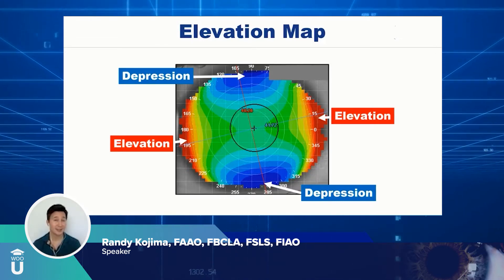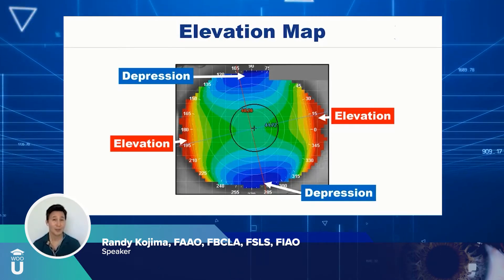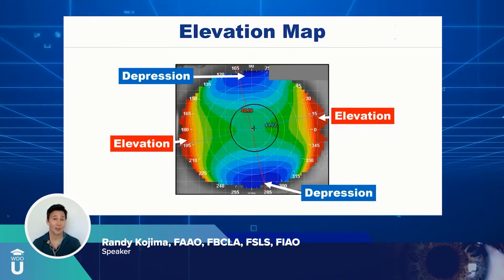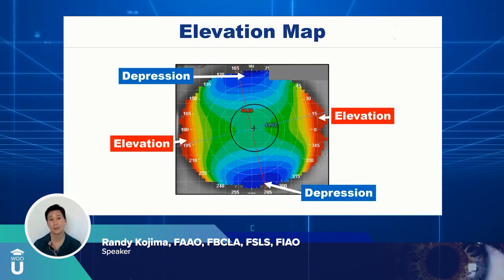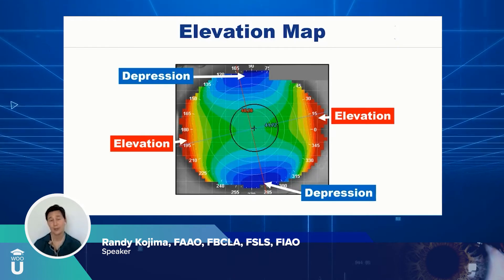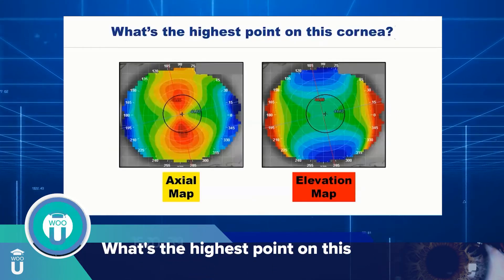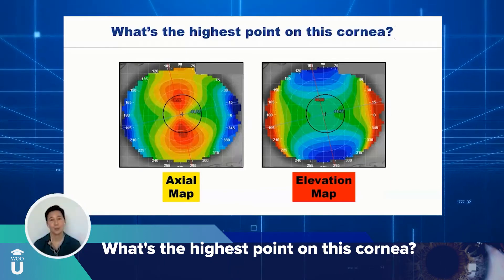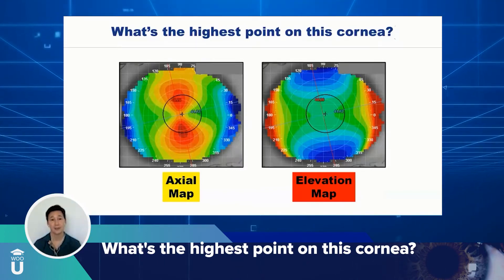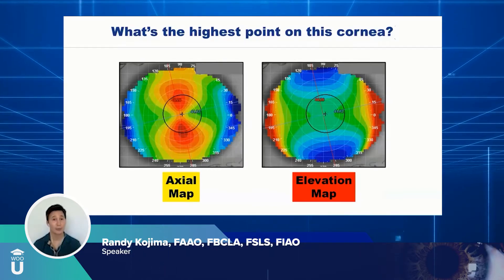In a case that's as easy as this, it's probably not necessary to use an elevation map, because you would know a contact lens is going to bear across the flattest meridian and lift across the steepest meridian. But when we start dealing with the irregular cornea, understanding the elevation map becomes really, really important. When we look at this eye, we want to shift over to the elevation map to understand where our landing and lift will be.